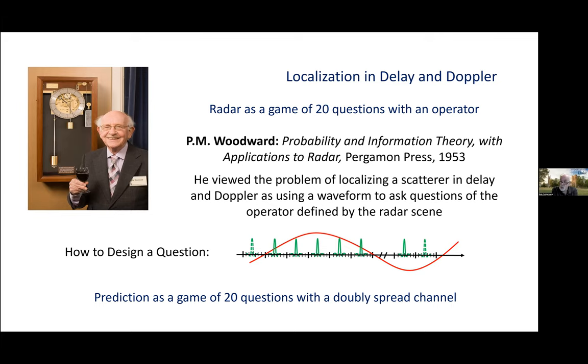And when he was thinking about questions, he defined a good question in terms of lack of ambiguity in the answer. So his objective was prediction or predictability. And what he wanted was questions with good localization in delay and Doppler.